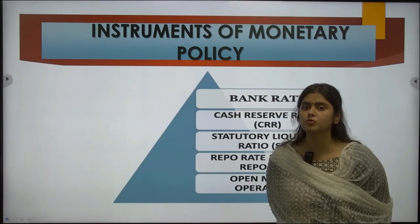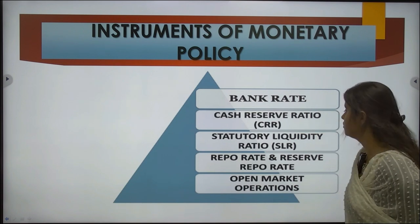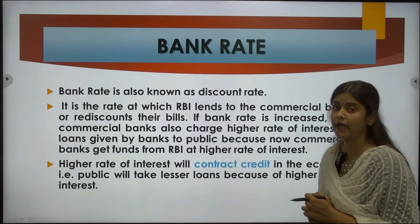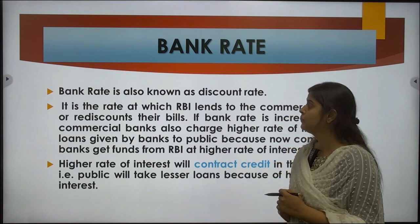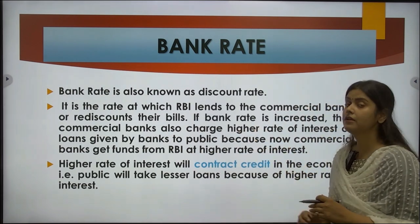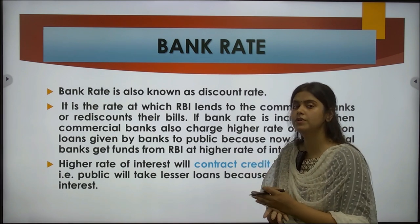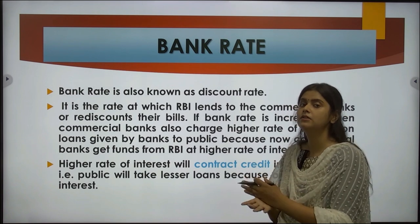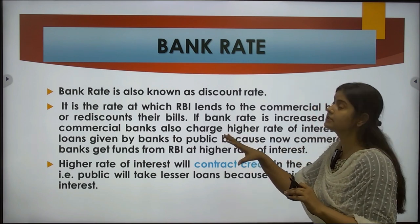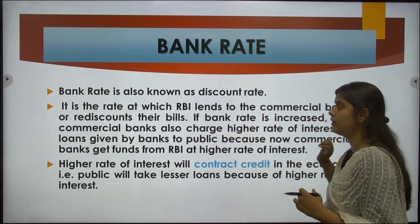Next is quantitative instruments used for monetary policy: bank rate, cash reserve ratio, statutory liquidity ratio, repo rate and reverse repo rate, as well as open market operations. Bank rate is also known as the rediscount rate. It is the rate at which RBI lends to commercial banks or discounts their bills. If the bank rate is increased, commercial banks have to pay more to the RBI, and in turn will charge a higher rate of interest from the public.